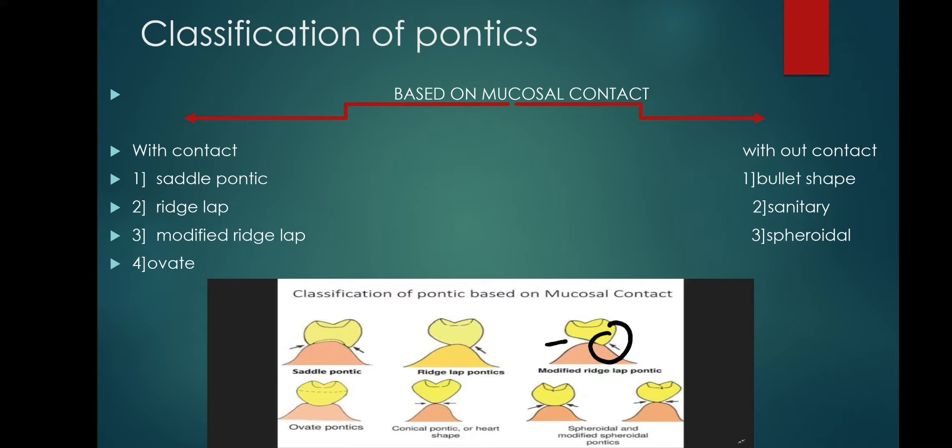In some cases involving nervous disorders or gingival irritation on the lingual surface, the buccolingual concavity is reduced further. When this concavity is more reduced, it produces what are called lap facings. This reduction of buccolingual concavity is the modification seen in modified ridge lap pontics.